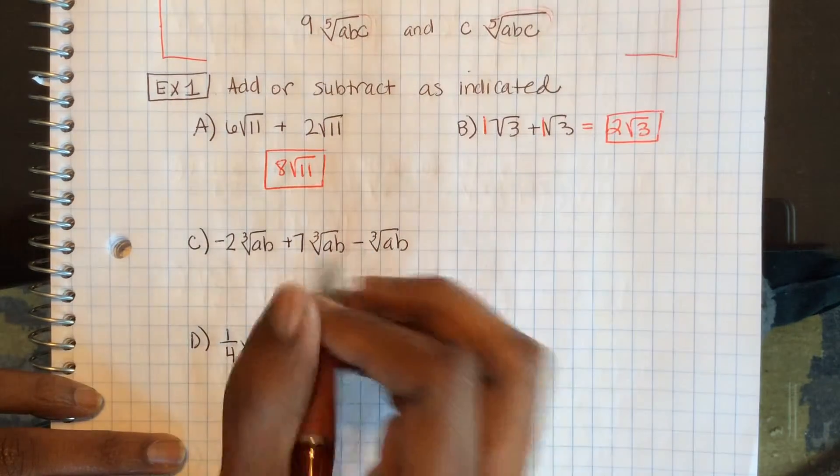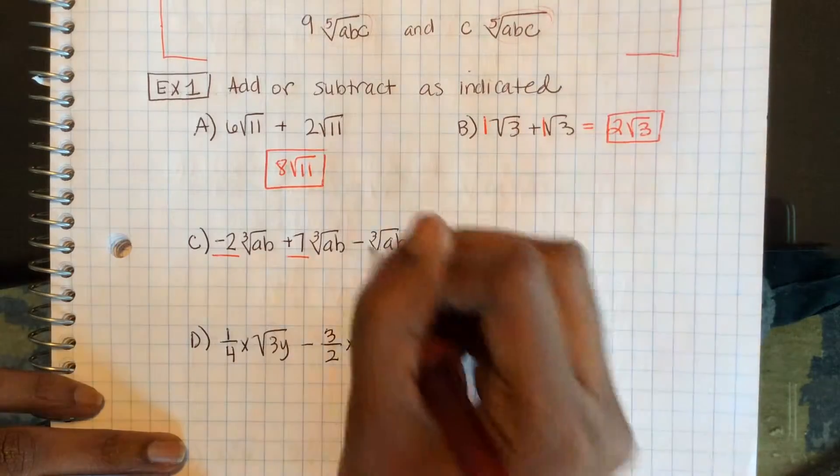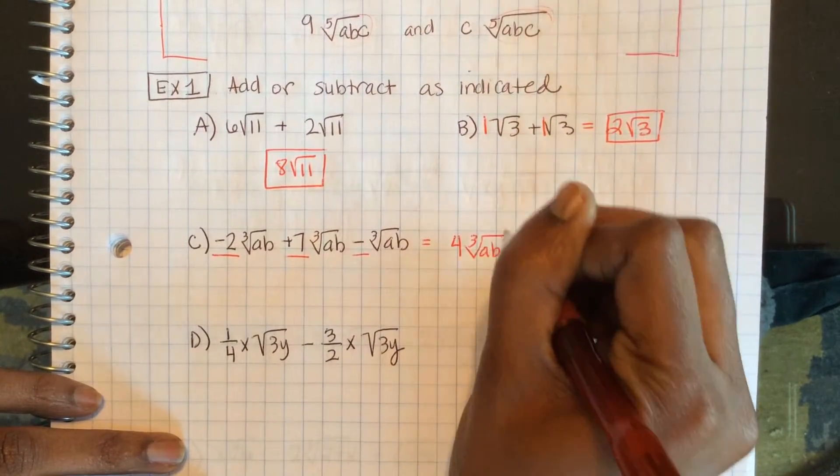Let's see, negative 2 plus 7 is 5, minus 1 is 4 cube root of ab.